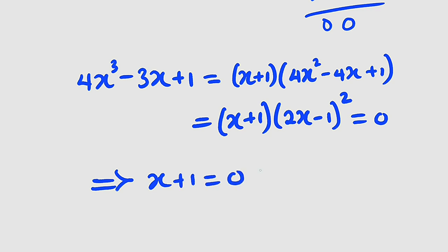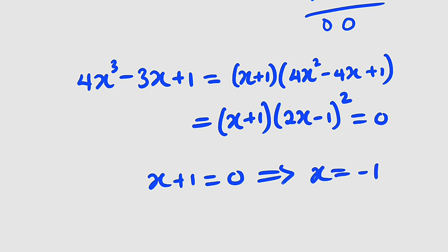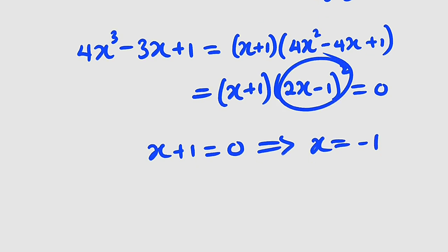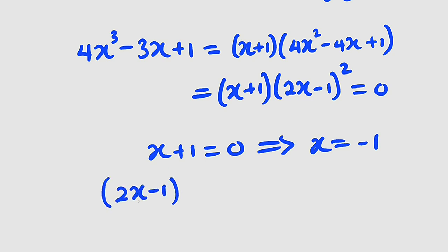This means x equals negative 1. From the other factor, 2x minus 1 all squared equals 0. Taking the square root of both sides gives 2x minus 1 equal to 0.